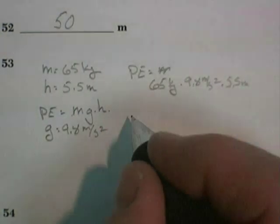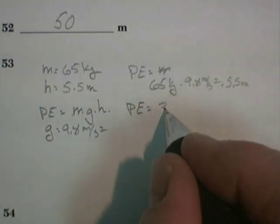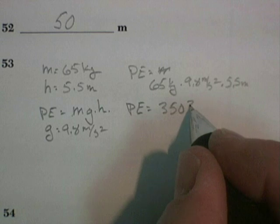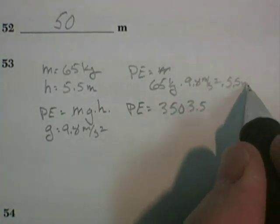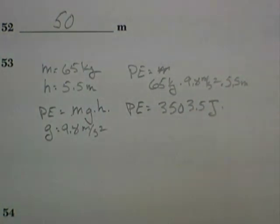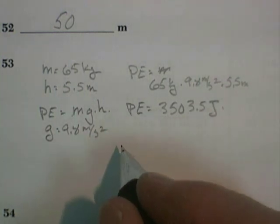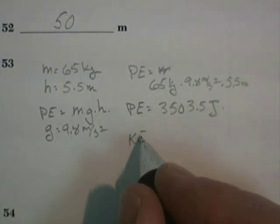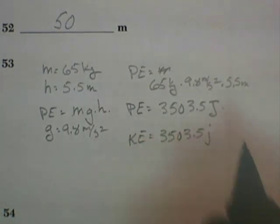Calculator time. The potential energy at the height of that launch would be 3,503.5 kilogram meters per second squared, newtons times meters, a newton meter or a joule. That's the potential energy necessary. If they're going to get all of that energy from kinetic energy, then the kinetic energy necessary would also be equal to 3,503.5 joules.